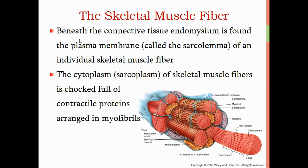So a muscle fiber is going to contain smaller units called myofibrils. This picture shows a muscle cell — we recognize this because inside we see a nucleus. All cells have a nucleus. We see multiple mitochondria, the powerhouse of the cell. So this is zooming in on one muscle cell or muscle fiber. A muscle fiber is made up of smaller units called myofibrils — we can count about eight myofibrils inside this muscle cell.